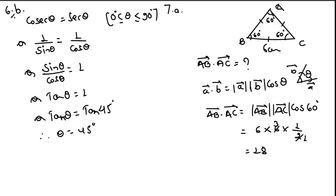Question 6b: solve cosec θ = sec θ for 0° ≤ θ ≤ 90°. Changing cosec in terms of sin and sec in terms of cos, we get 1/sin θ = 1/cos θ. Cross-multiplying gives sin θ/cos θ = 1, so tan θ = 1. Within the range 0° to 90°, tan 45° = 1. Therefore θ = 45°.